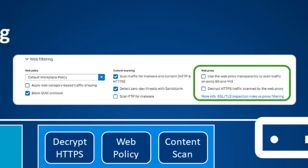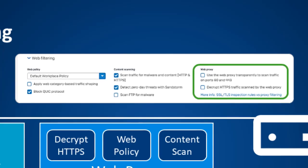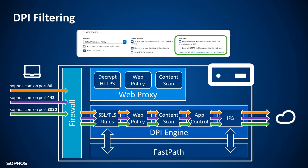With the DPI engine and separate SSL/TLS inspection rules, the controls available in the web filtering section have changed. Using the configuration shown here, all of the traffic will be handled by the new faster DPI engine for IPS and proxy-less web filtering and SSL decryption on any port for HTTP and HTTPS using port-agnostic protocol identification.